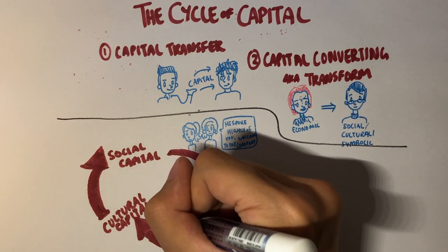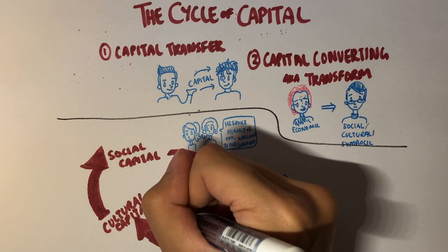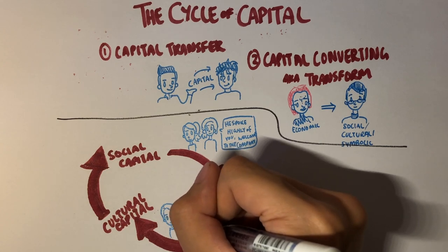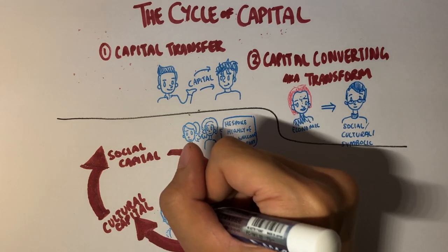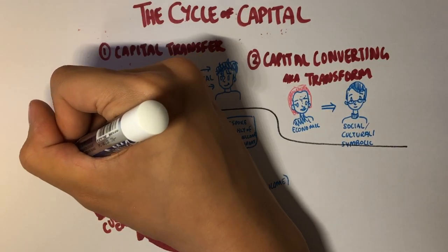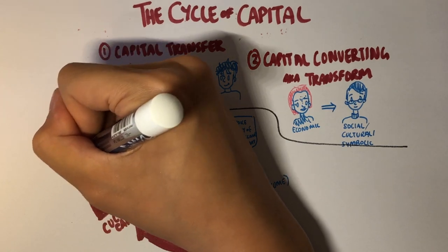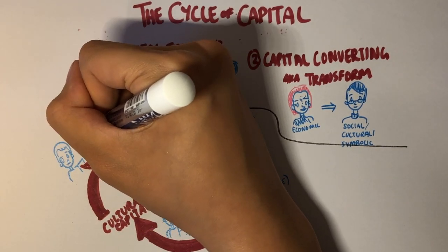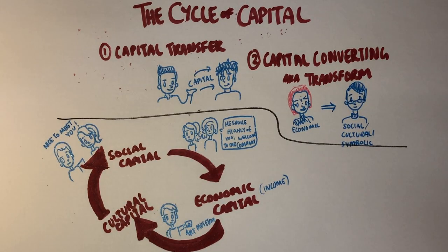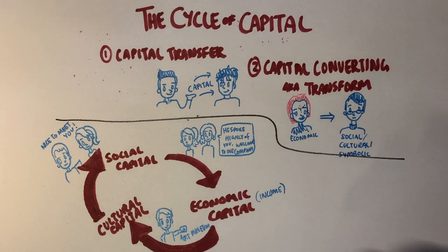They gain this income through their social connections. Once they have this income, the person may choose to visit an art gallery, a concert, or anything else that could increase their cultural capital. Once at these cultural events, there's an opportunity to meet more people. Therefore, this cultural capital can lead to them gaining more social capital, thereby creating this cycle of capital that goes on forever with the main three species of capital.